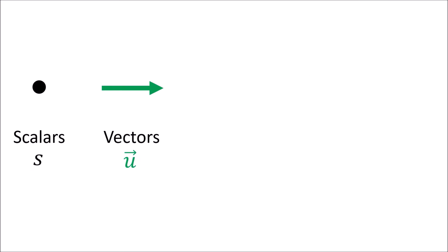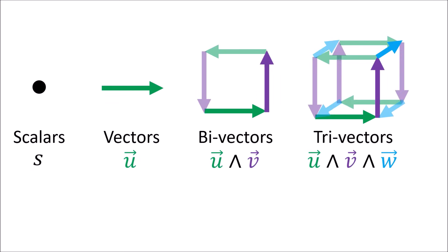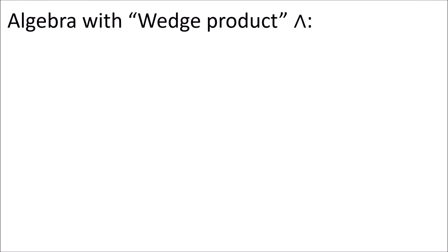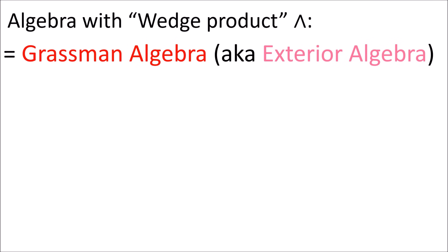These are called bivectors, and they're a much more straightforward way of representing rotations. With the wedge product we can build bivectors, trivectors, and the other higher dimensional multivectors, which make it easier to represent geometric ideas in physics without having to rely on vectors for everything.